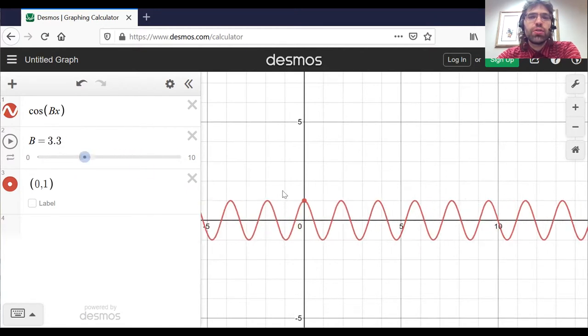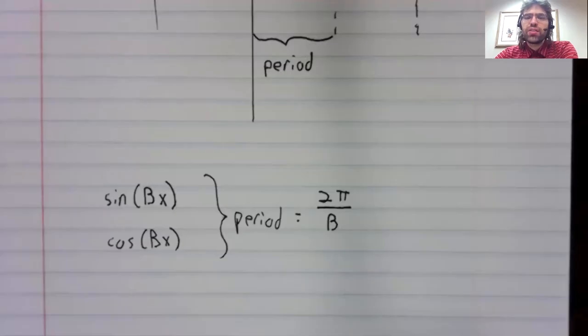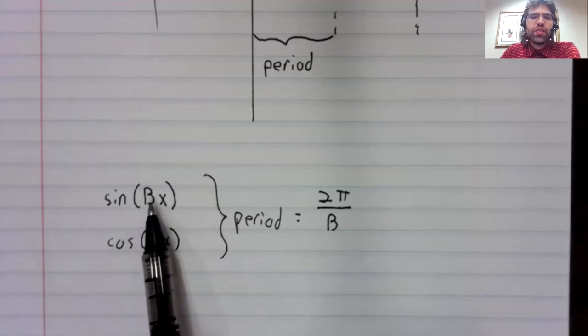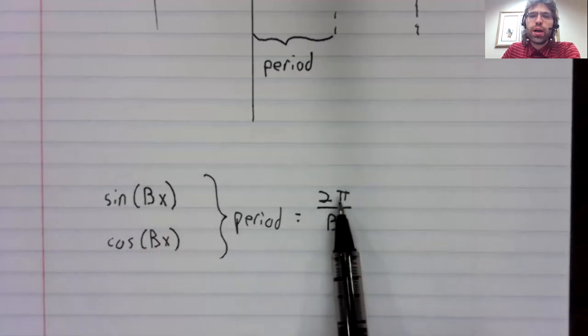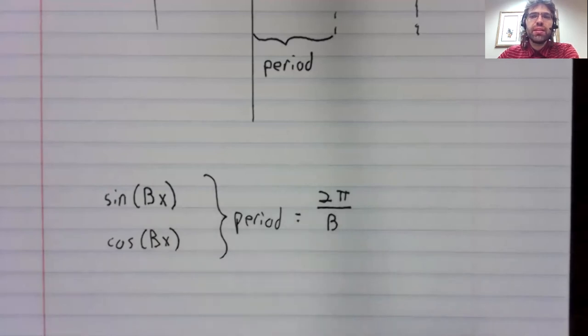We're always passing through this point zero one. And for both the sine and the cosine, the period is given by the same formula. The period of the sine of bx or the cosine of bx is two pi divided by b.